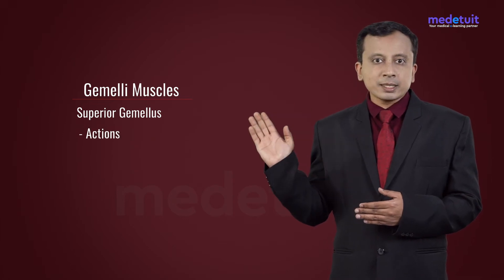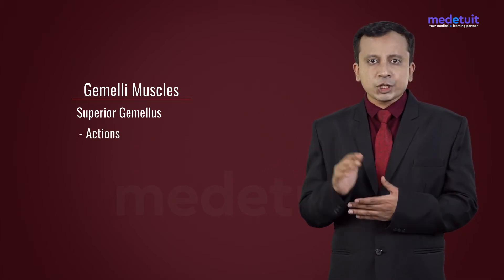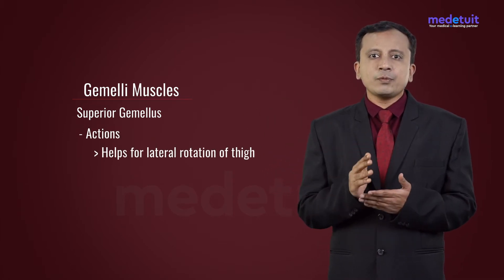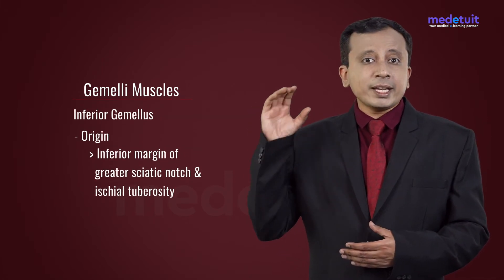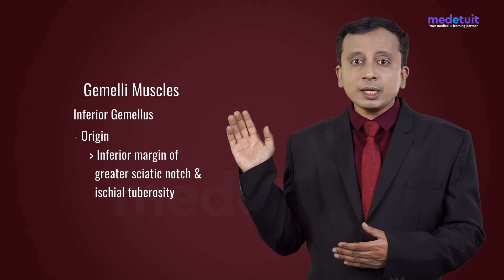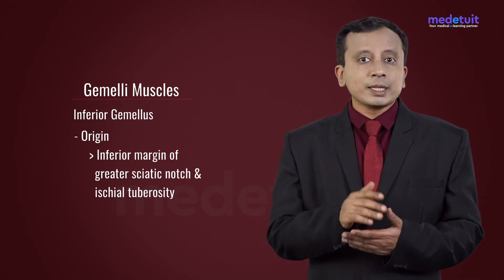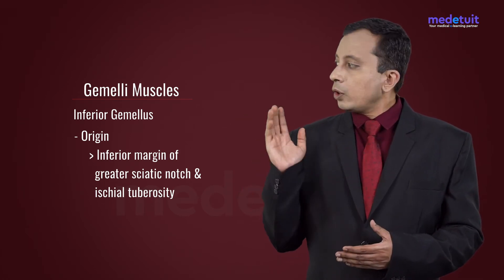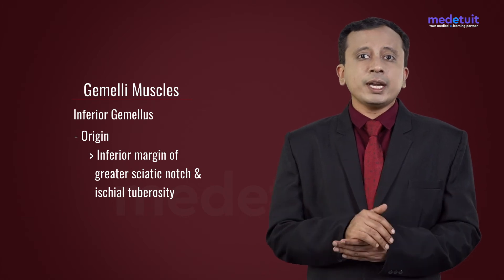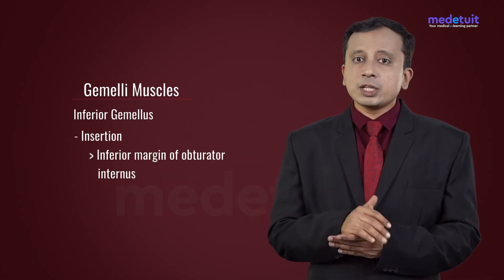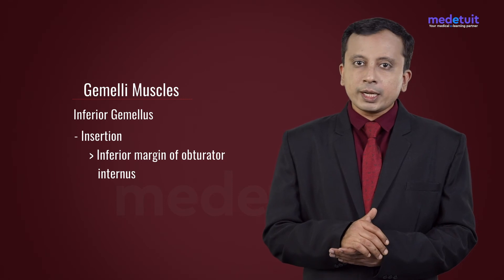Whenever this muscle acts, it is a combined action — it helps in lateral rotation of the thigh. The inferior gemellus muscle takes its origin from the inferior margin of the greater sciatic notch along with the ischial tuberosity. It goes laterally along with the obturator internus muscle and gets inserted into the inferior margin of the obturator internus.